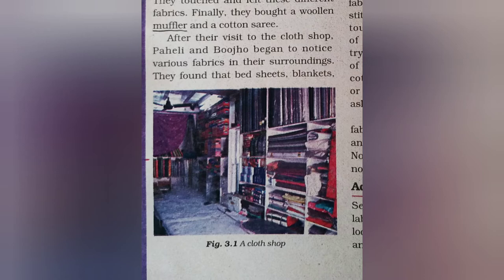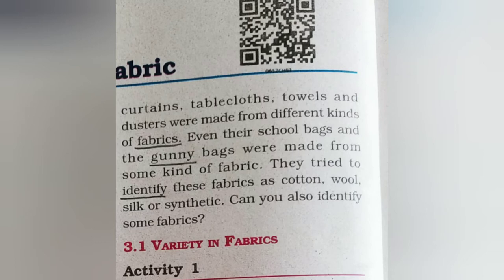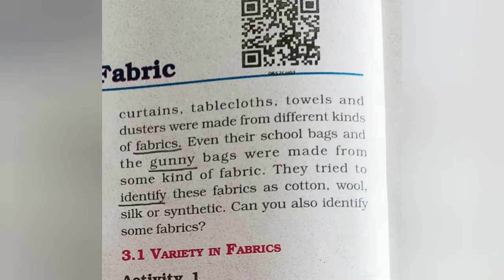You can see in this picture a shop with many types of fabrics and clothes — bedsheets, sarees, curtains, towels, and dusters, all made from different kinds of fabrics. Have you seen the fabric of your bags, or a duster and towel? All those are different kinds of fabrics. Even school bags and gunny bags are made from some kind of fabric, as you can see in this picture.